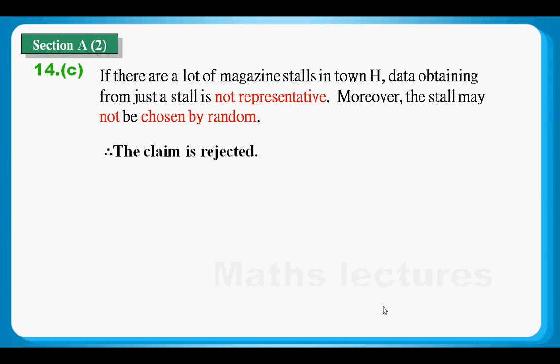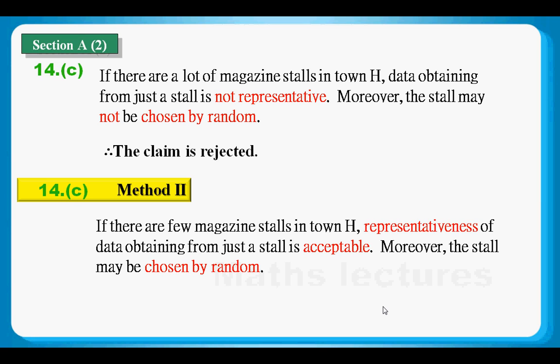But there is a second point of view. We can look at the data collection in this way. If there are few magazine stores in H, representativeness of data obtaining from just a store is acceptable. Moreover, the store may be chosen by random. That means if representativeness and randomness are satisfied, then the data collection is satisfied. So the claim is accepted.